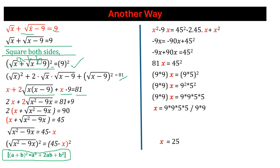So x minus 9 on the right side, then adding x and x gives 2x. Bringing 9 to the right side gives 90 on the right side. We can take 2 as common, so we have 2 times the quantity x plus root of (x² minus 9x). Bringing 2 to the right side and dividing: 90 divided by 2 equals 45.